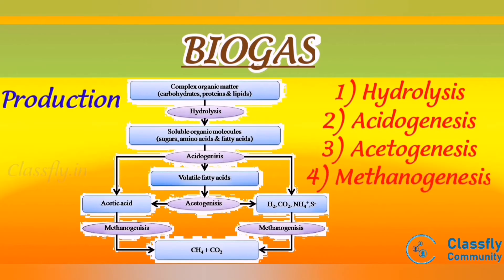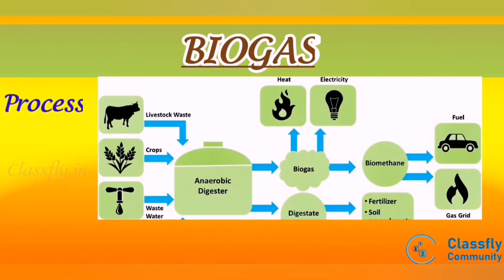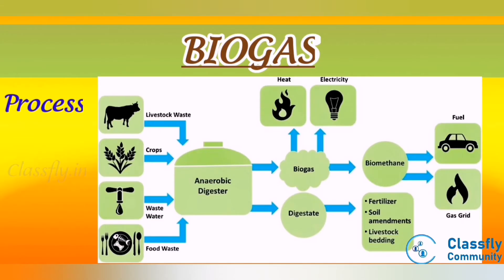Biogas is produced mainly by four steps: first, hydrolysis; second, acidogenesis; third, acetogenesis; and last, methanogenesis. The scrubbing of biogas removes impurities generated during the digestion process, such as carbon dioxide and hydrogen sulfide. Biogas goes through a cleaning process to become biomethane. A simple method for hydrogen sulfide removal utilizes steel wool in a glass bottle. For carbon dioxide and hydrogen sulfide removal, a method of water spray cross-flow can be used, where the biogas enters one end of the tube and experiences water streams flowing in the opposite direction.